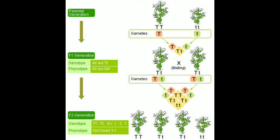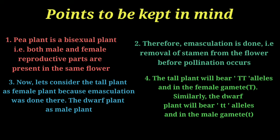Some key points to keep in mind during a monohybrid cross: first, the pea plant is a bisexual plant, meaning both the male and female reproductive parts — the androecium and the gynoecium — are present in the same flower.